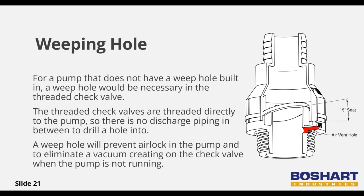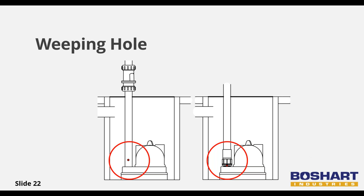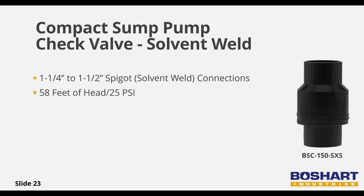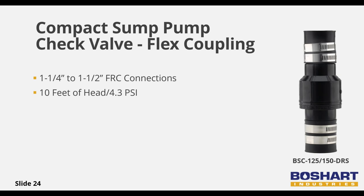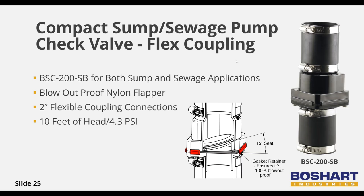Weep holes are often already installed in the discharge casting of many pumps, but some require a weep hole to be drilled into the line before the check valve — check with the pump manufacturer if unsure. Compact check valves with solvent weld inlets do not come with flexible coupling configurations, so thrust blocking is not required and the pressure rating is 25 psi. Compact check valves with flexible rubber coupling inlets also have flexible rubber coupling outlets; the maximum pressure rating is 4.3 psi and these need to be thrust blocked.